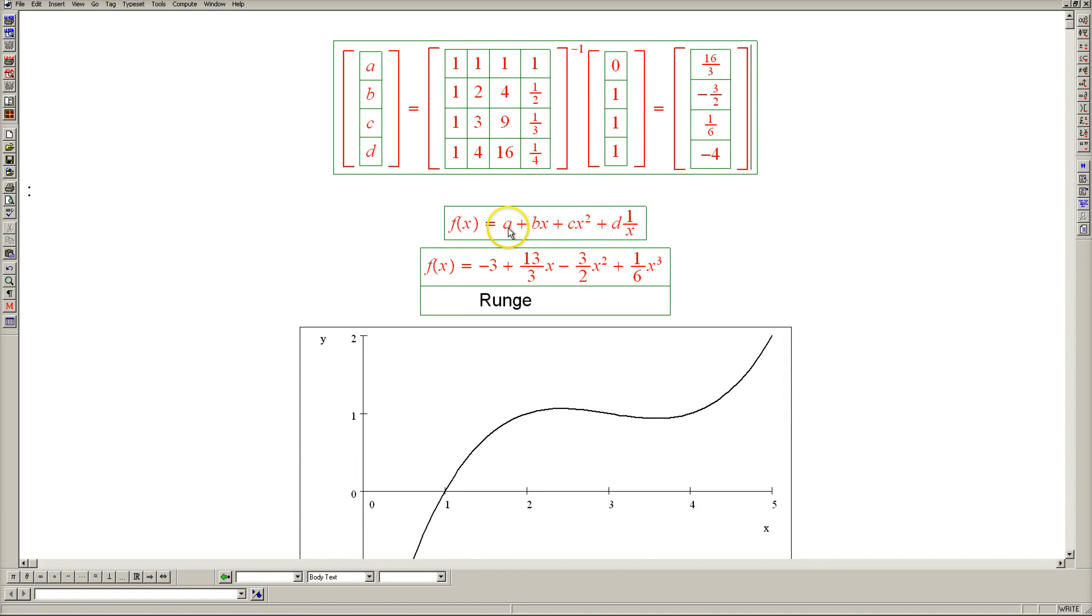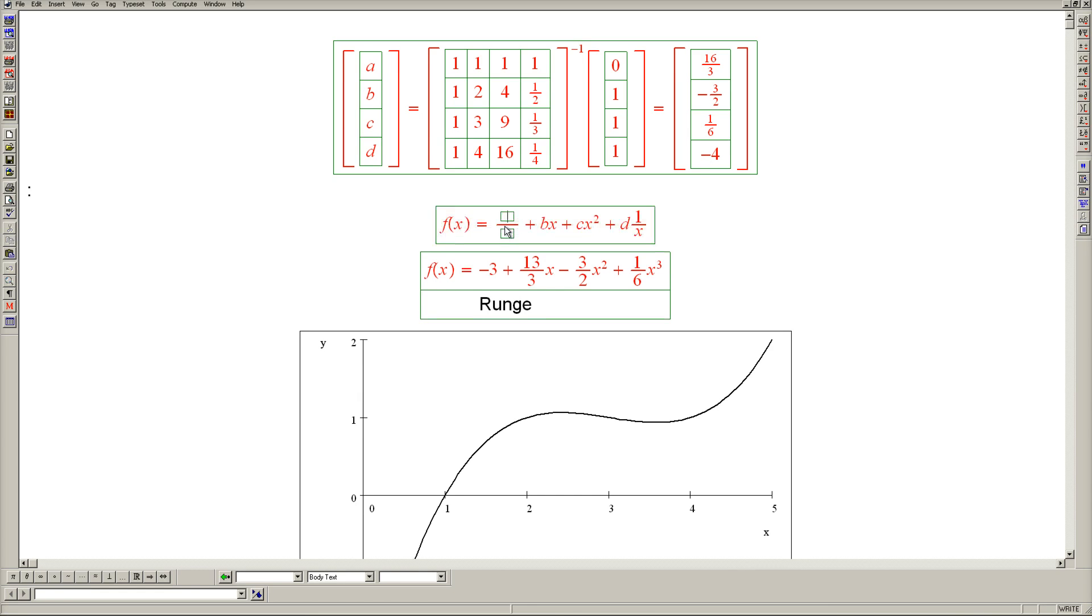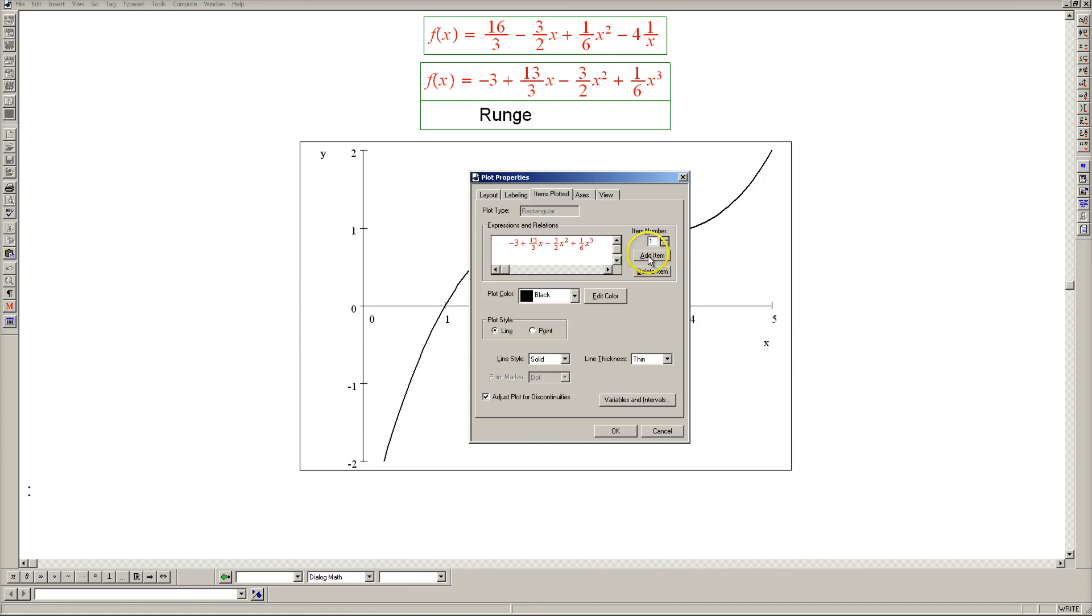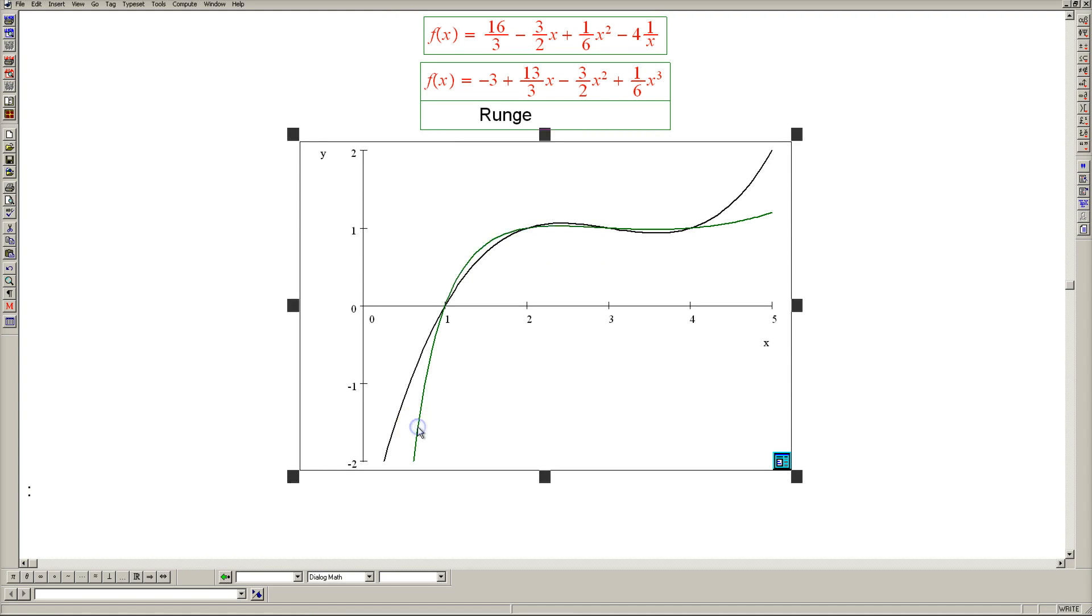Okay, so now let's put them in here. a is 16 thirds. Let's see how well we did. Let's add this function to the graph. The new function will appear in green. And here it is.